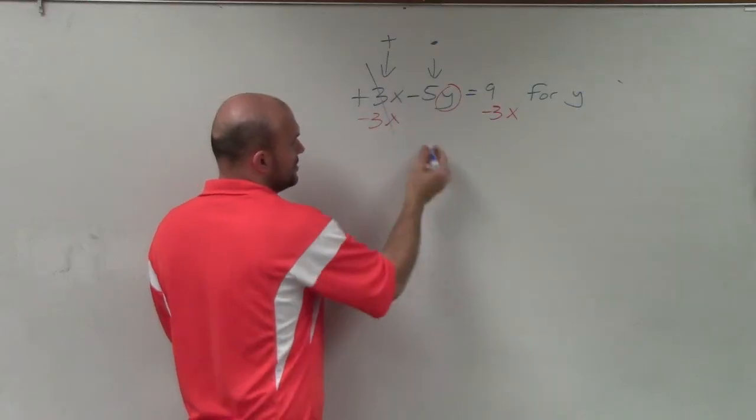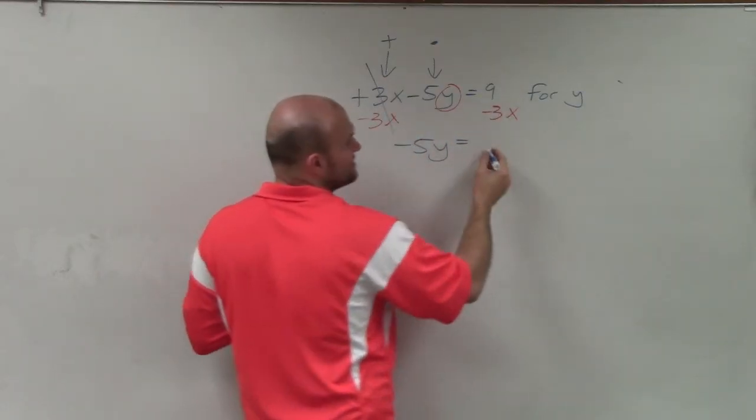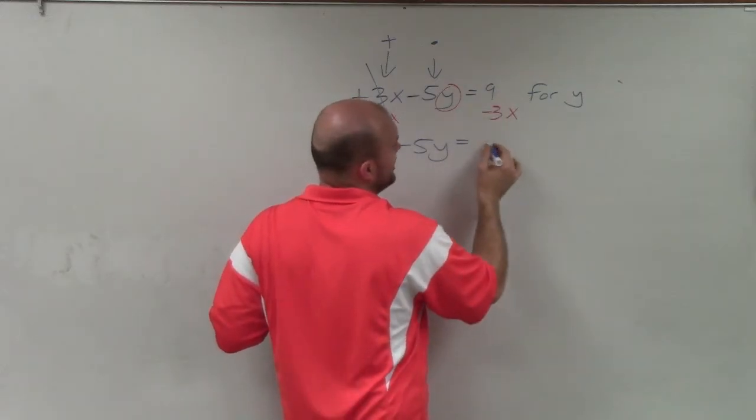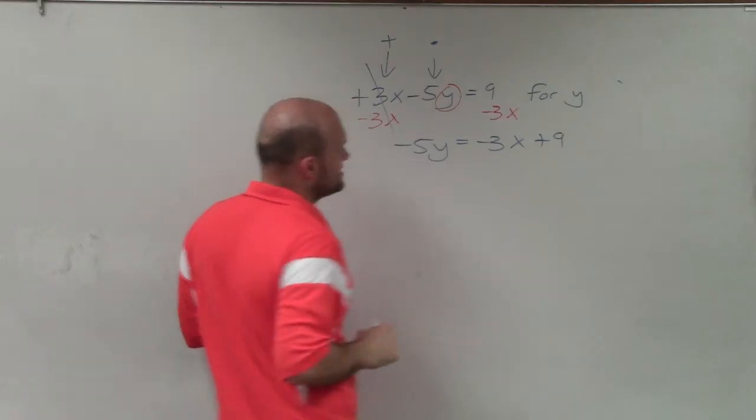Well, that's going to subtract to 0. And then I'm left with negative 5y equals... We usually like to write the variable in front of our constant. So I'll write negative 3x plus 9, because the 9 is positive.